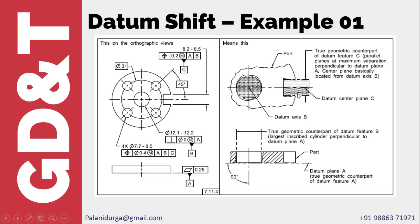Similarly, we have positional tolerance for these four holes with B and C datums. B is nothing but the center hole and C is nothing but the slot. These two are also regardless of material boundary condition. So whatever may be the hole size and the slot size after manufacturing, an expanding mandrel will be used to get the center of the hole which is the datum axis, and then slip gauges are used to build the gap and get the center plane of the slot. In that condition, we check the four hole positions.